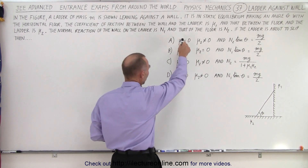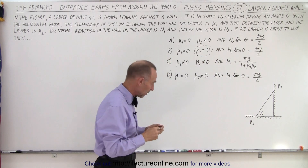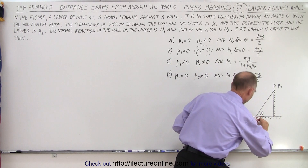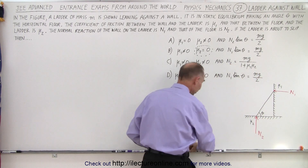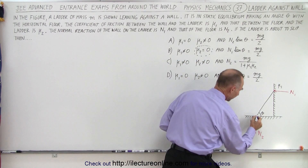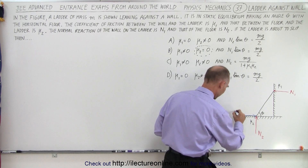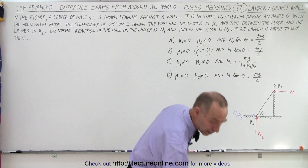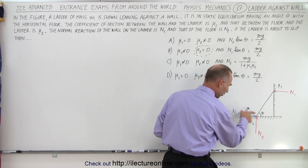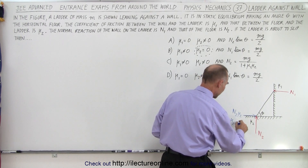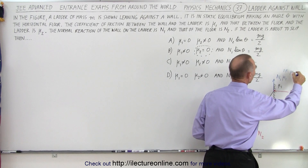Taking a closer look, I notice there is one where mu sub 2 is equal to 0 and the others are not. Now remember, if we draw the normal forces, here we can see that's the normal force N2 and here this is the normal force N1. If there is friction between the floor and the ladder, then we're going to have a force in this direction, and so this force is going to be N2 times mu sub 2. And here we have a force in this direction — this would be N1 times mu1 — if mu1 is not equal to 0.